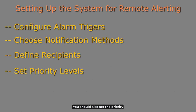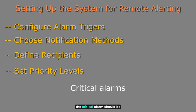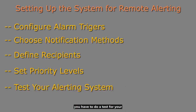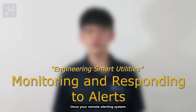You should also set the priority level for each alert. You can classify alerts based on their severity — for example, critical alarms should be addressed immediately while less severe ones can wait. Finally, before your alerting system goes live, it is essential to test the alerting system to ensure that it is working as expected.